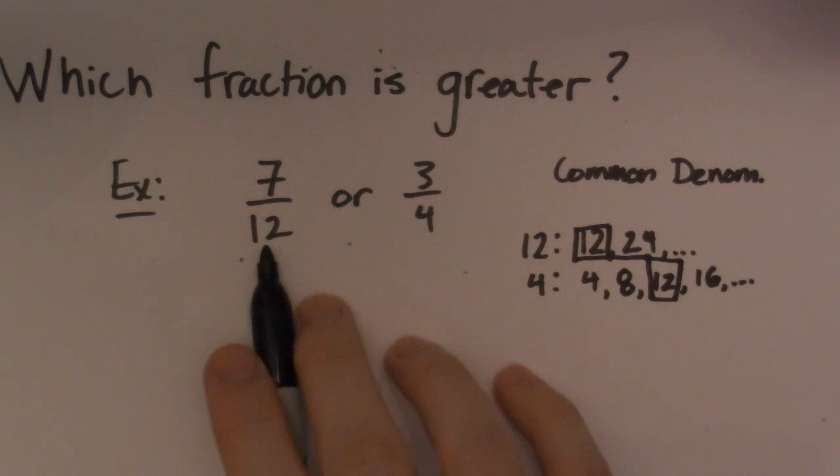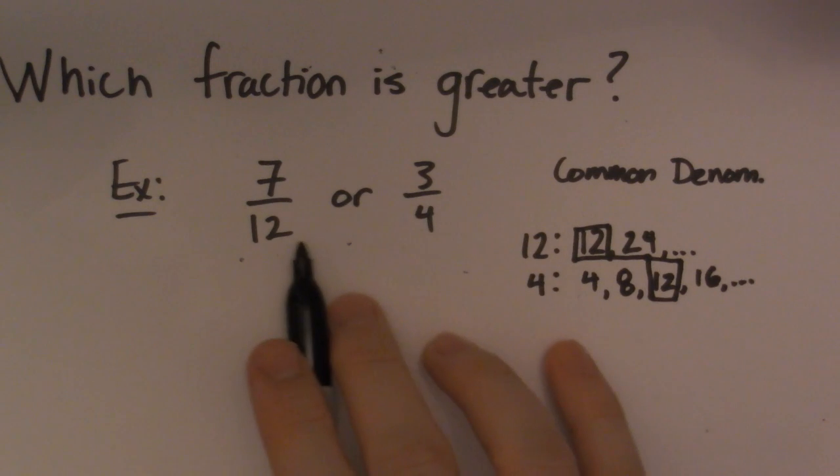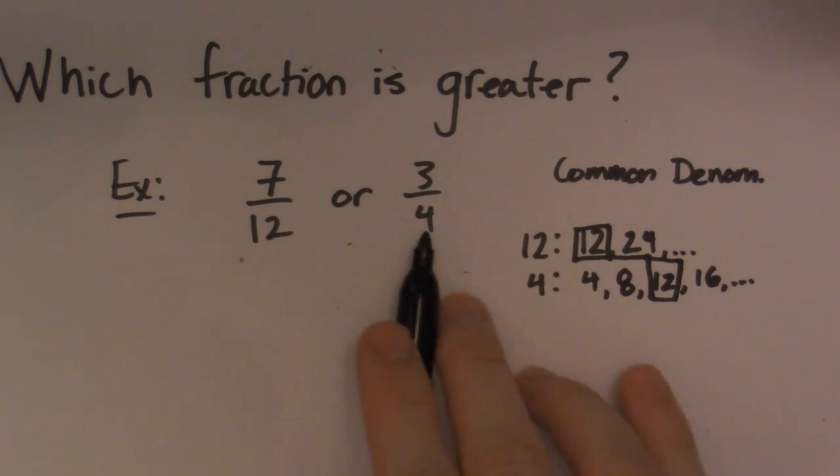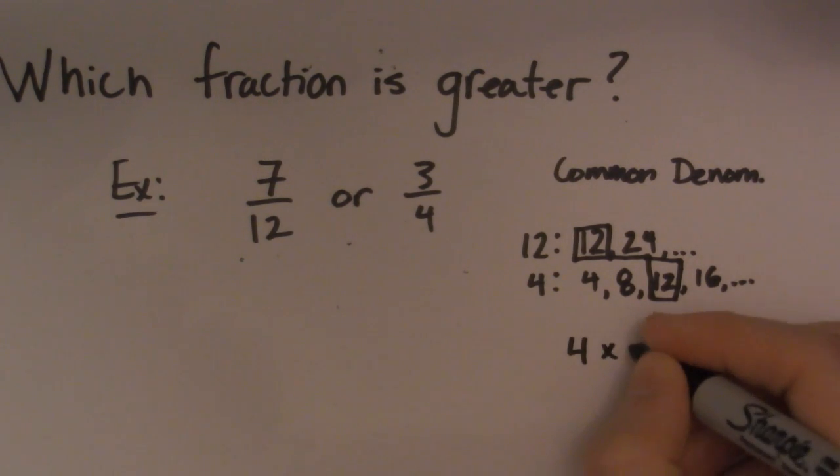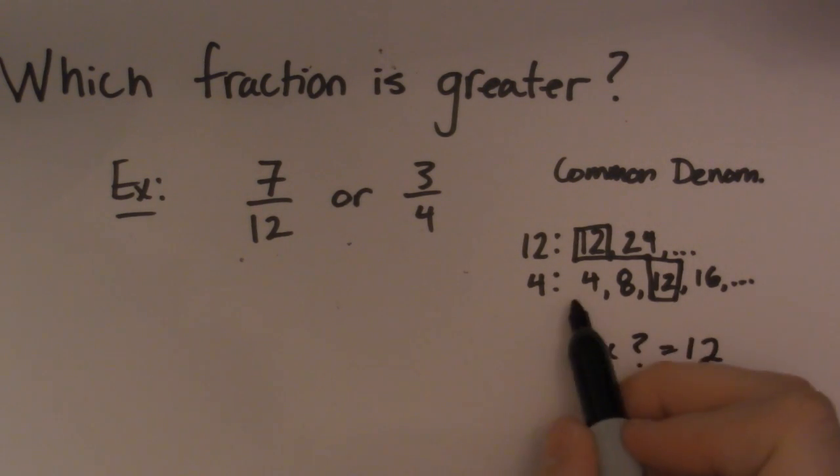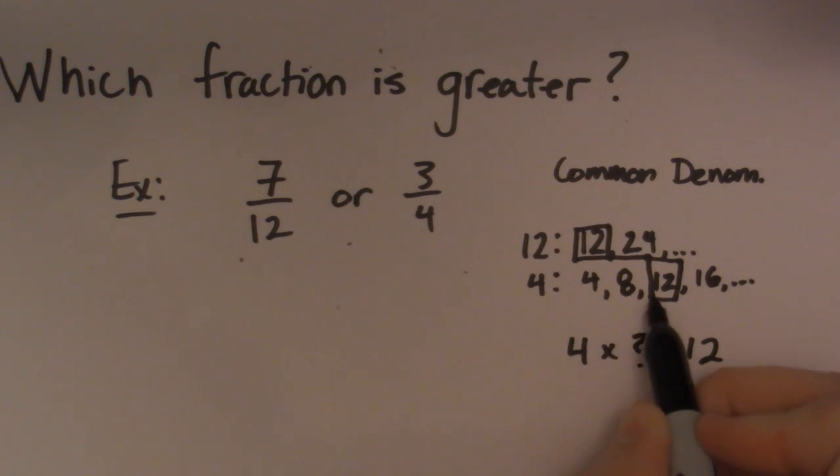So if I look at this 12 right here, it doesn't have to change because that's in my denominator already. So I only need to change this 4. So you got to ask yourself the question, 4 times what gives me 12? So the thing about this list method, it's always the number that you have, the number of the spot. So if I look at this, 4 is the first number, 8 is the second number, 12 is the third number.